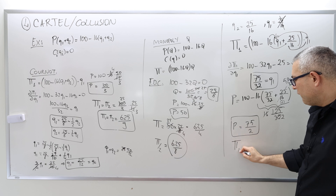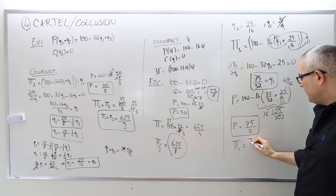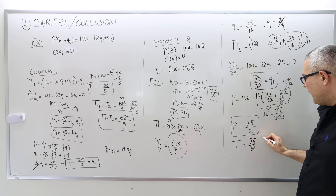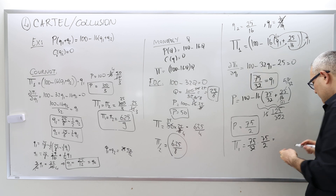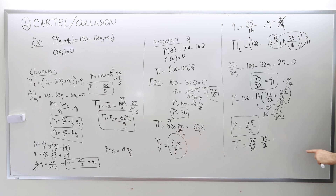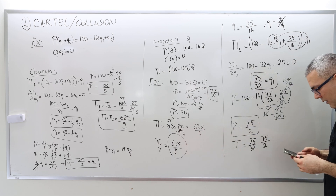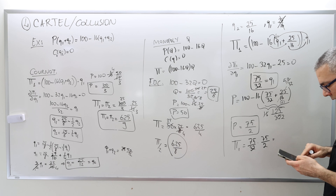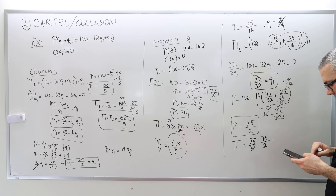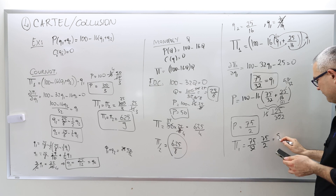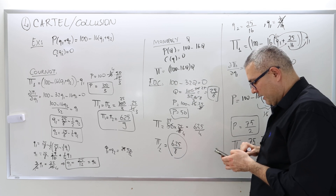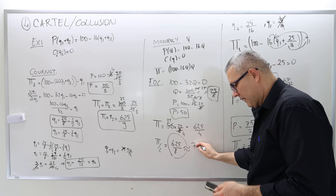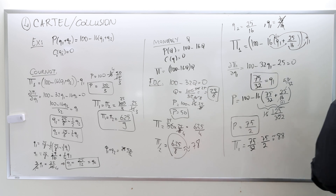My profit from cheating is quantity 75/32 times price 75/2, giving roughly 88. Compare this to the collusion profit of 625/8, which is roughly 78. So firm one earns more by cheating than by honoring the cartel agreement.